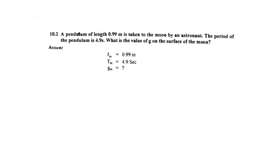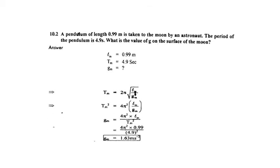In the next numerical, we have given the pendulum length as 0.99 meters on the surface of the Moon and the time period of the pendulum is 4.9 seconds. We have to find the gravitational acceleration on the surface of the Moon as given in the data. Again, we are using the same formula: the time period of the pendulum Tm is equal to 2pi under root L over G. For the surface of the Moon, we use LM and GM.